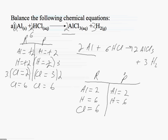And on the product side, I have 2 times 3 for chlorine. So chlorine is equal to 6. Everything is balanced.